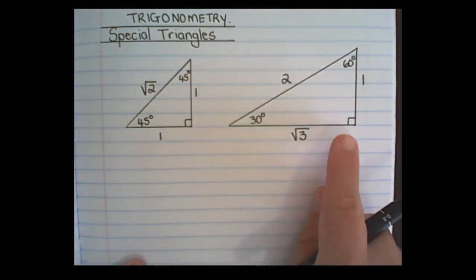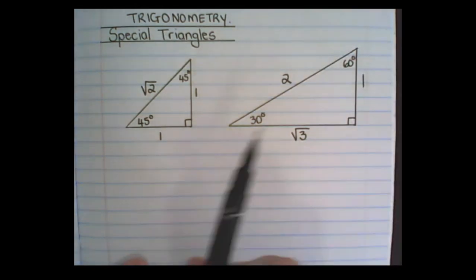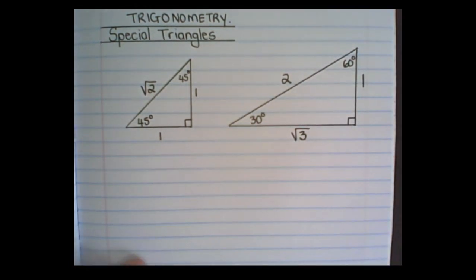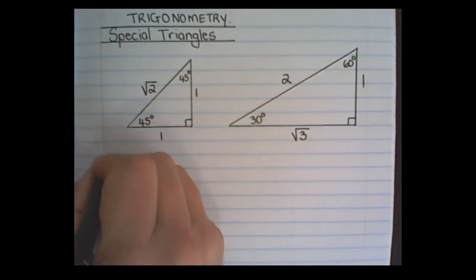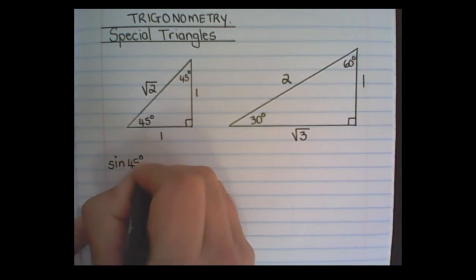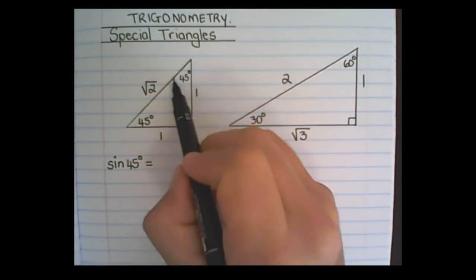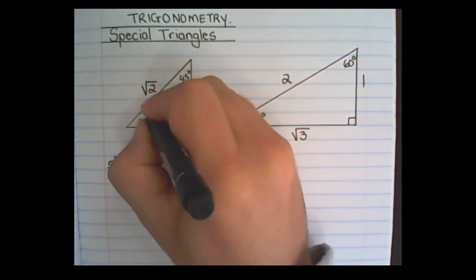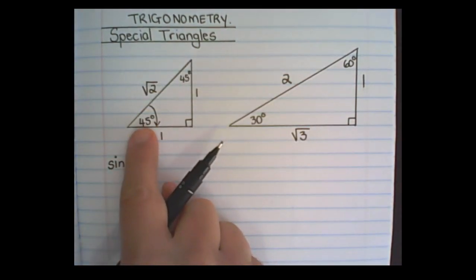Again, you do not need to calculate it, but it's easy to remember. Now that we have the special triangles, we can find all of the trig ratios for these angles. Let us start with the 45-degree triangle. The sine of 45 degrees — sine is opposite over the hypotenuse.